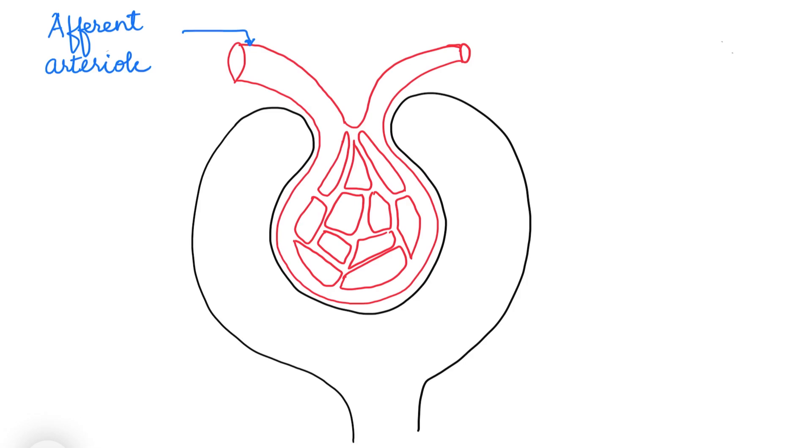Blood flows into the capillaries through this, and the other narrow tube is the efferent arteriole that carries the blood out of the network of capillaries.